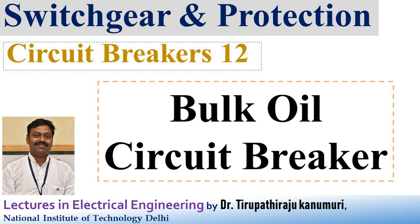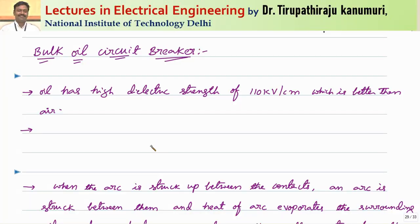Hi all, today we are going to discuss about the bulk oil circuit breaker. We know that oil has high dielectric strength of about 110 kV per centimeter, whereas air has only 30 kV per centimeter — this we have already seen in our last class.